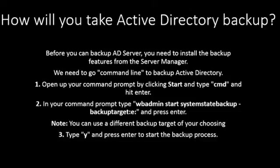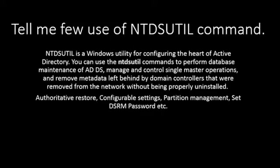How will you take an Active Directory backup? Before you can back up an AD server, you need to install the backup feature from Server Manager. Go to the command line to backup Active Directory — open your command prompt by clicking Start and typing cmd and hitting Enter. In your command prompt, type: wbadmin start systemstatebackup -backuptarget:E and then press Enter. You can use a different backup target of your choosing. Type Y and press Enter to start the backup process.